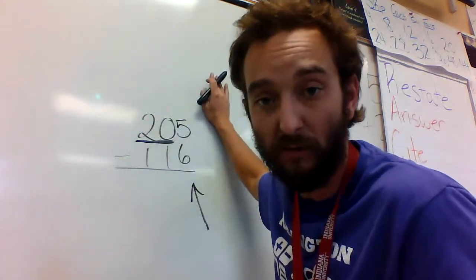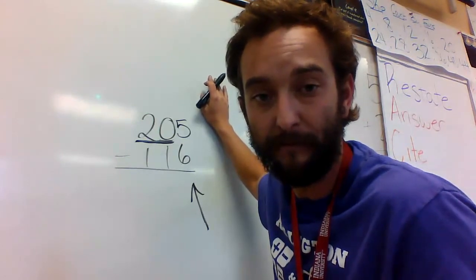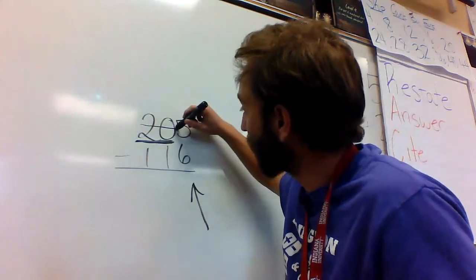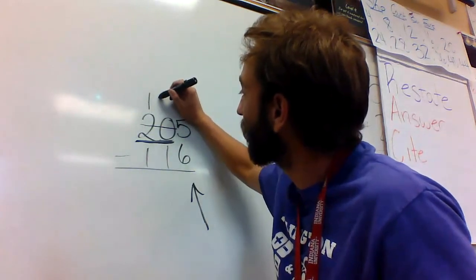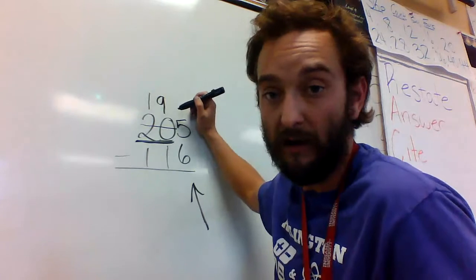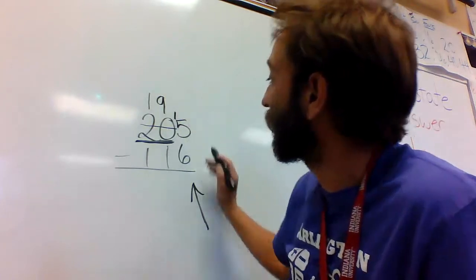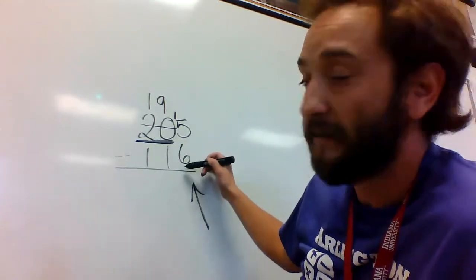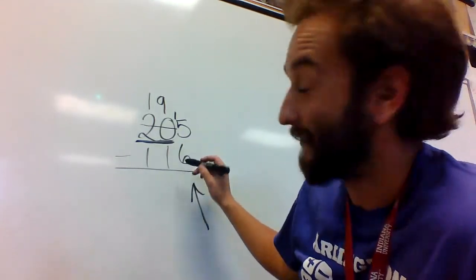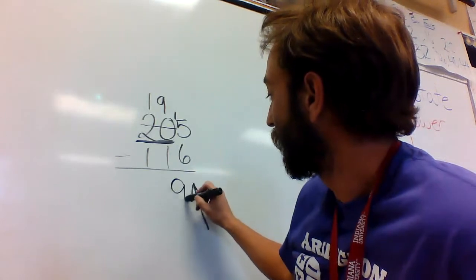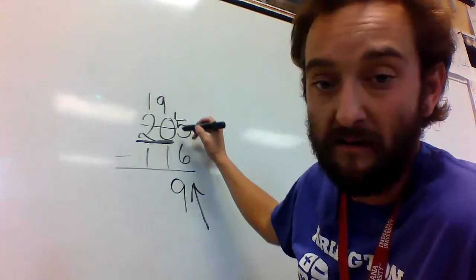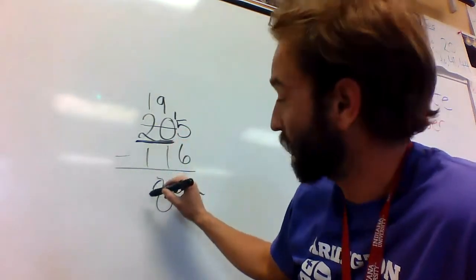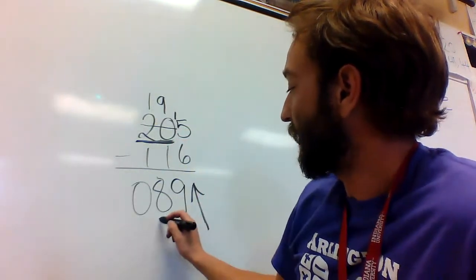So I'm going to borrow from 20 instead. If I have one less than 20, this whole thing now becomes 19, and this becomes 15. So now I can subtract like normal. I have 15 minus 6 is 9, then 9 minus 1 is 8, and then 1 minus 1 is 0. So my answer is 88.